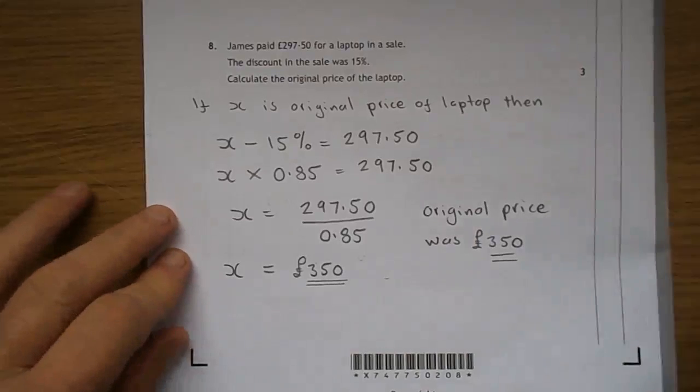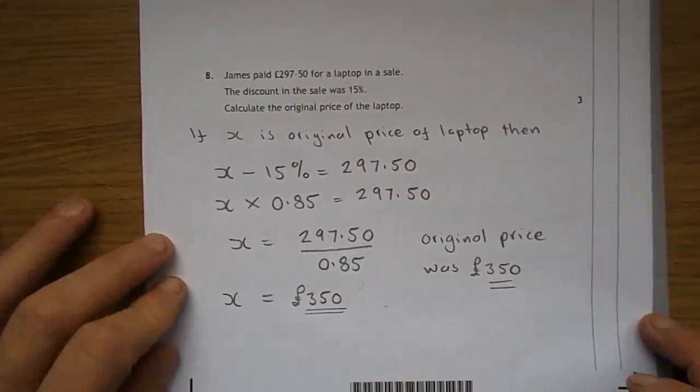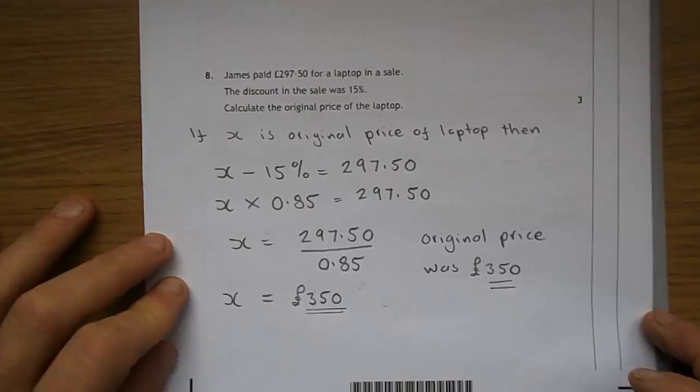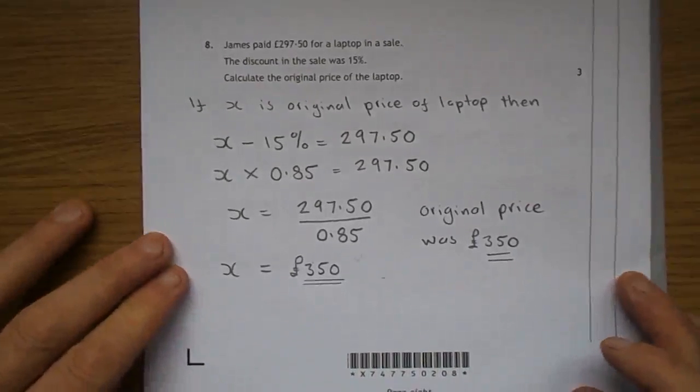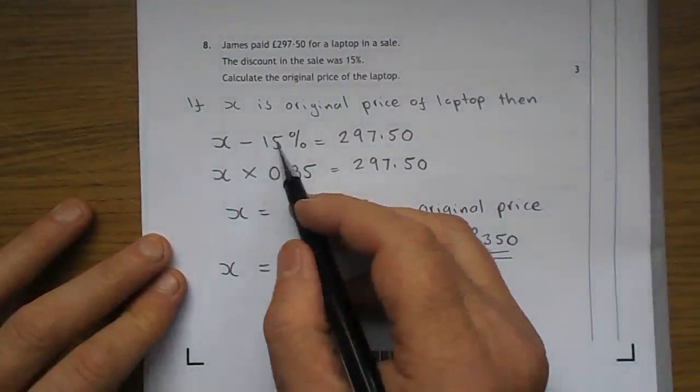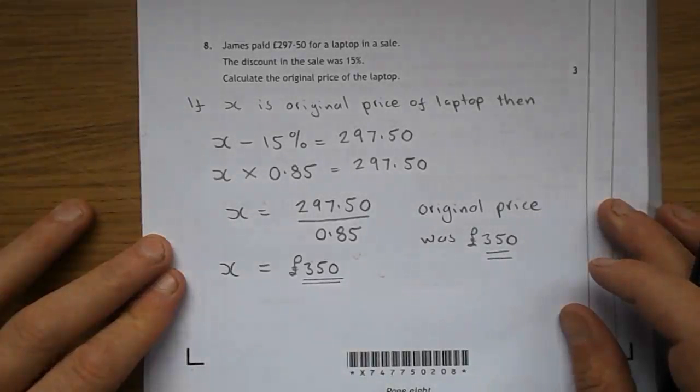Question 8. James is paid £297.50 for a laptop in a sale, the discount was 15% calculate the original price of the laptop. So if X is the original price of the laptop, then the original price, take 15%, gives you the £297.50 that they mention up there.